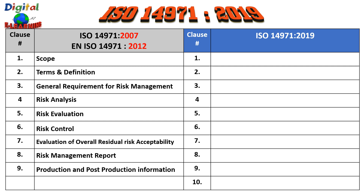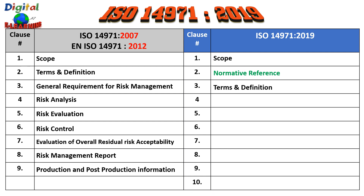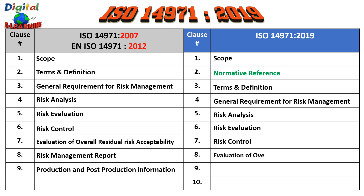In the new structure, the scope remains, and a new normative reference clause has been added. Because of this addition, the numbering shifts — the total clauses go from 9 to 10 and each clause is pushed down. Terms and definitions is now clause 3 (previously clause 2), followed by general requirements for risk management, risk analysis, risk evaluation, risk controls, and evaluation of overall residual risk.